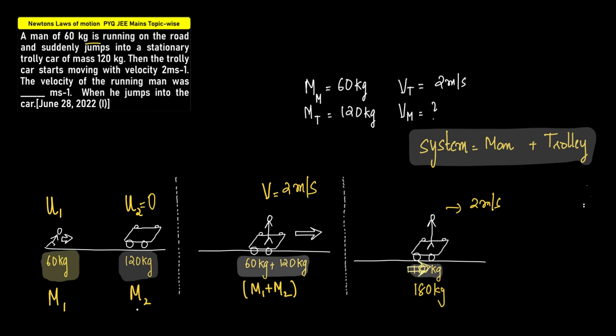These kind of questions from the practice that we have done so far, the moment we see this question, we should be able to understand that this is nothing but conservation of linear momentum. Which means we need first to identify the system. We start doing this in conservation of linear momentum. System is man and trolley.